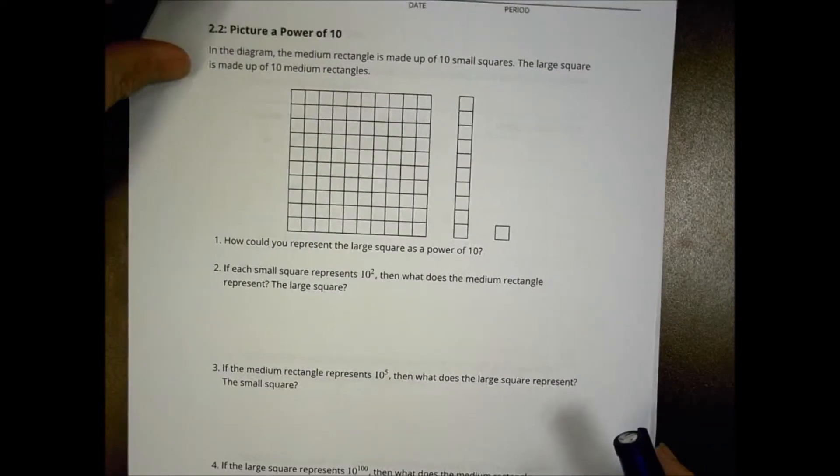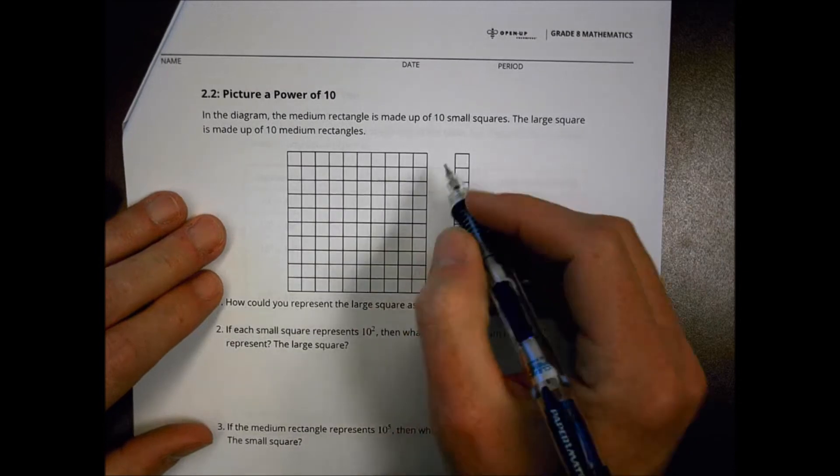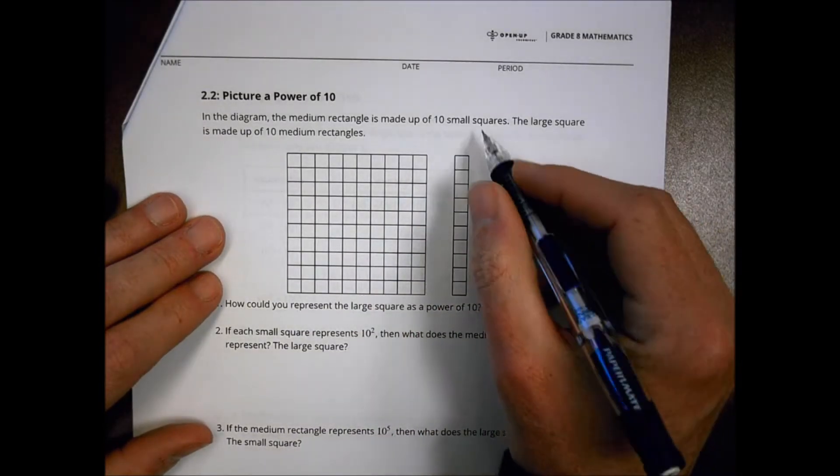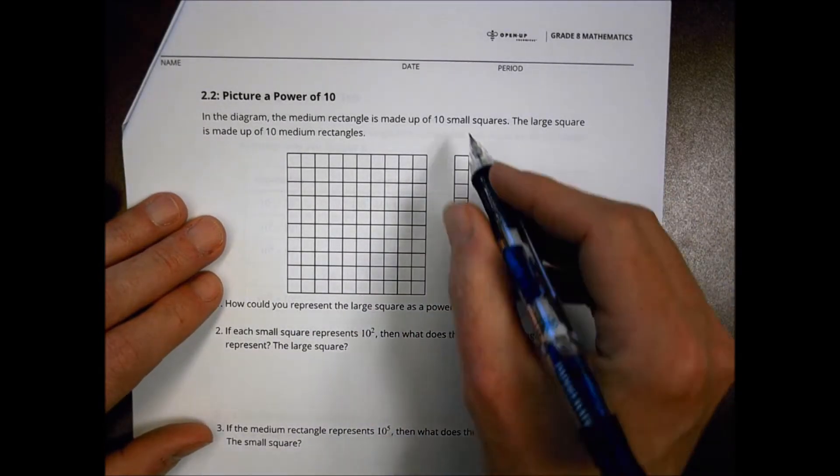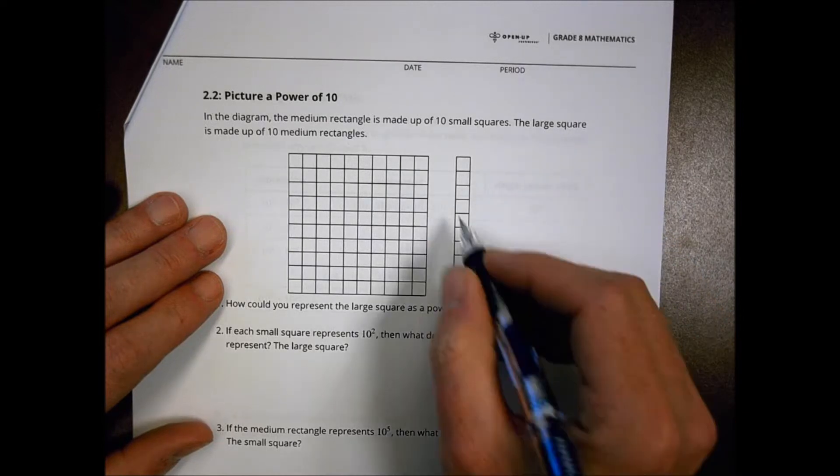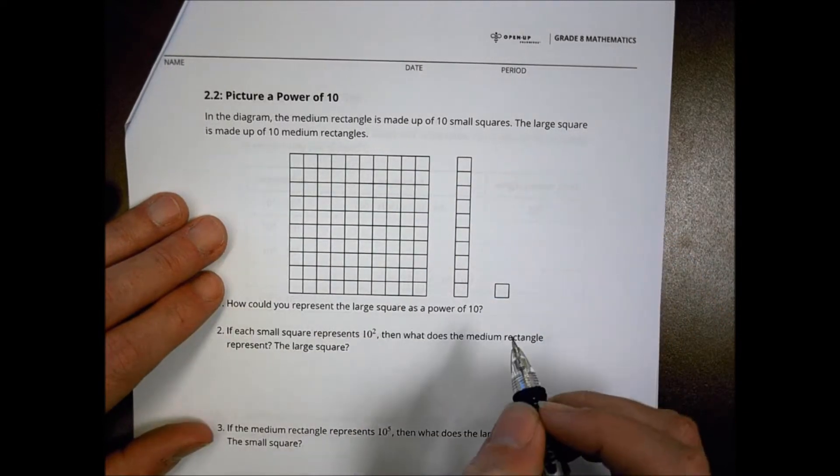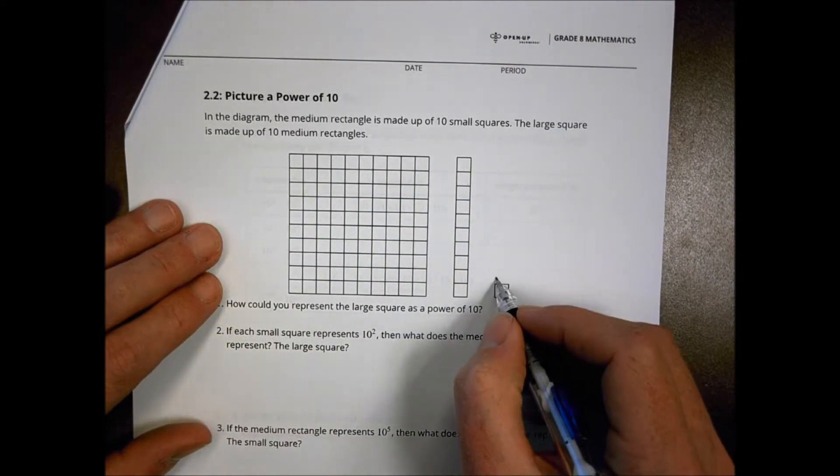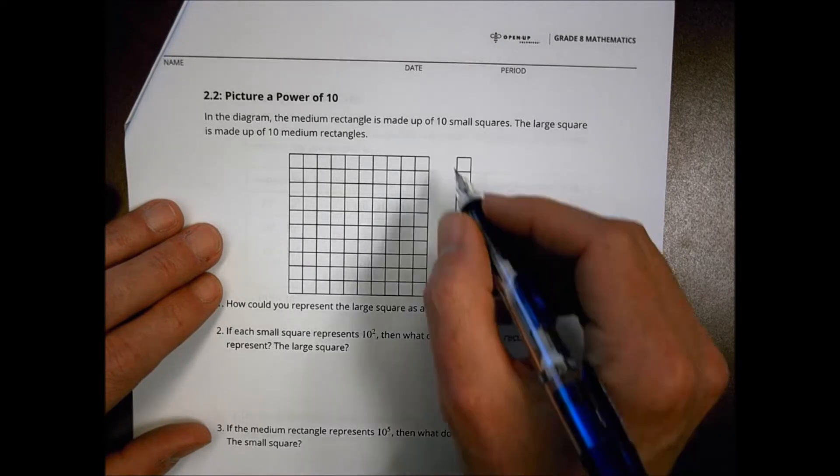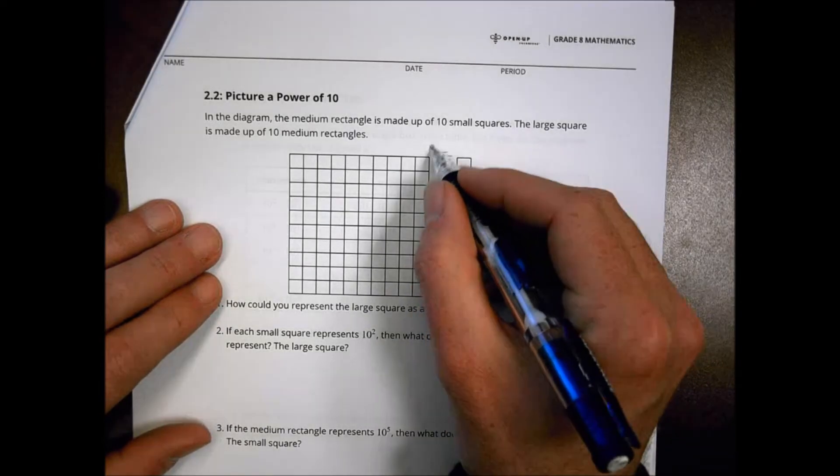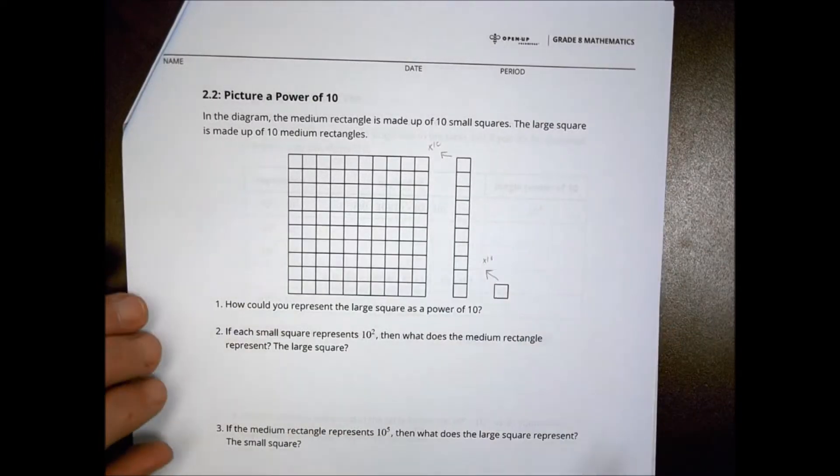Picture a power of 10 is what it's called here. In the diagram, the medium rectangle is made up of 10 small squares, and the large square is made up of 10 medium rectangles. So every time we go there, it's like we're multiplying by 10. We're multiplying by 10 every time we move to the left there.